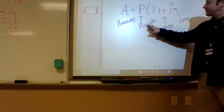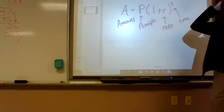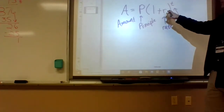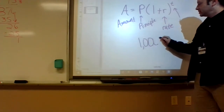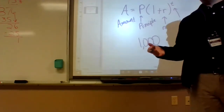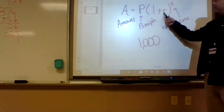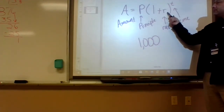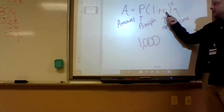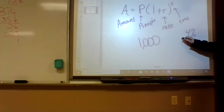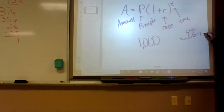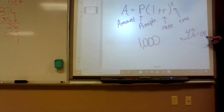So the initial amount — let's say you invested a thousand dollars and you're getting 4% every year. What's 4% as a decimal? You move the decimal place twice, so it's 0.04, which is literally 4 one-hundredths, which is 4%.